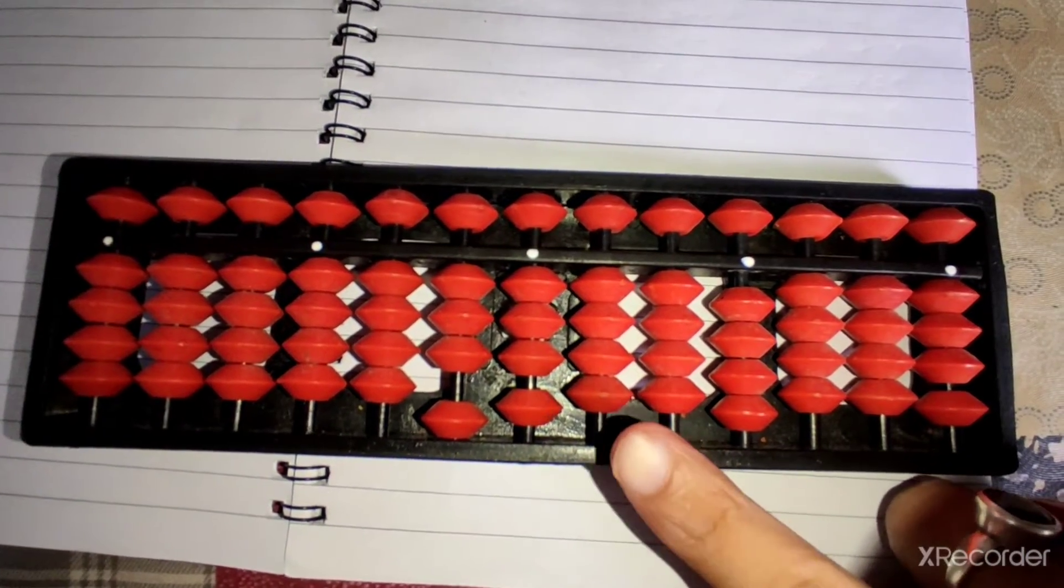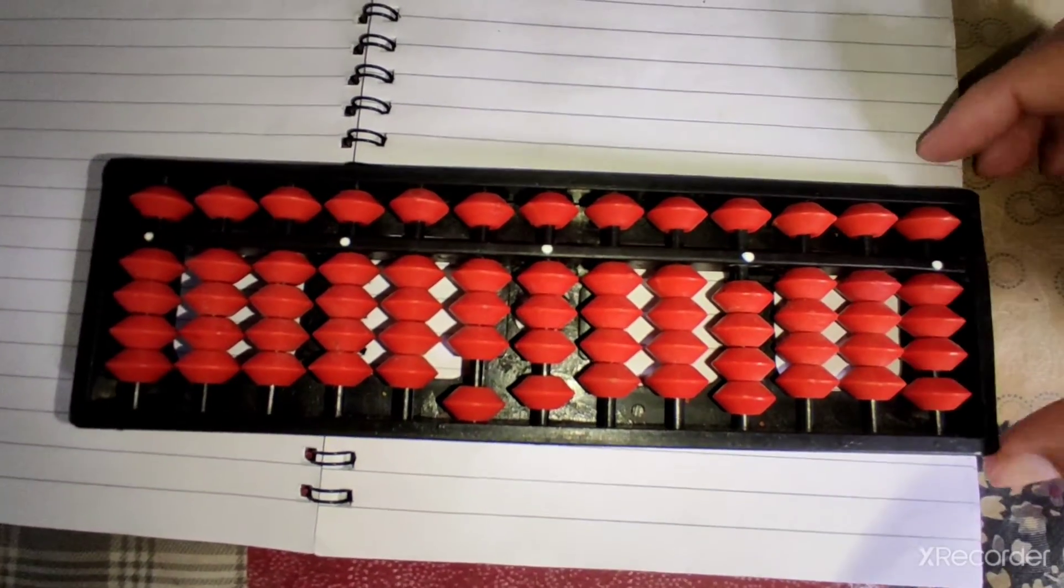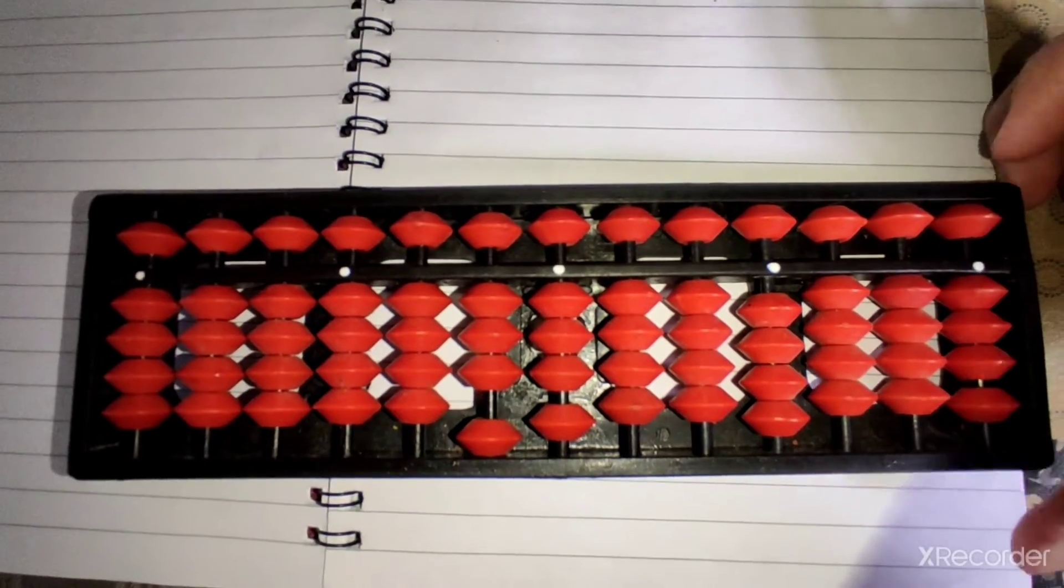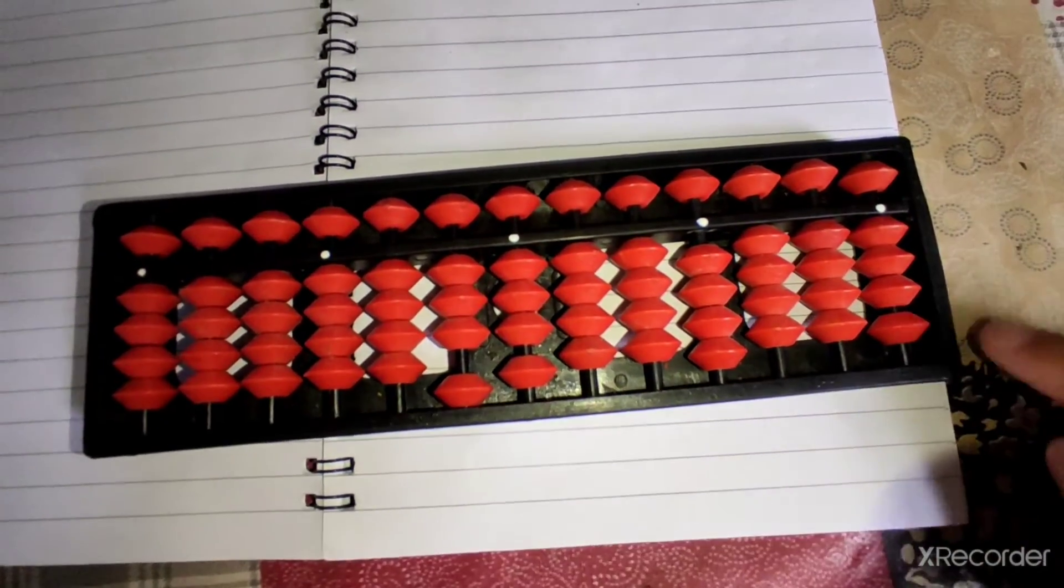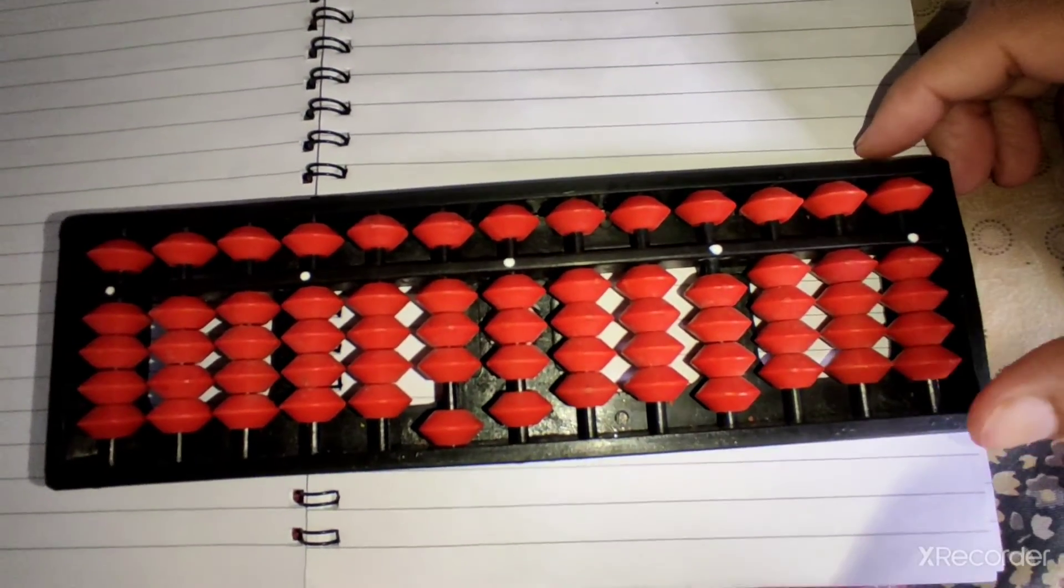This is an abacus. Let's learn the parts of the scale. The outer part of the scale is called the frame.